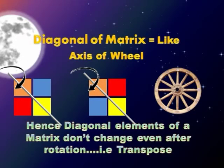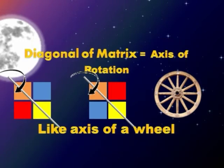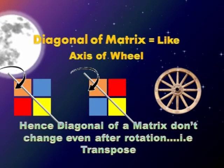You might have seen that the diagonal elements of a matrix never change even after taking the transpose. This is because the diagonal is like the axis of a wheel, and that is why the diagonal elements stay where they are even after taking the transpose. This is very similar to the axle of a wheel remaining where it is even during the rotation of the wheel. Everything else moves, but the elements on the axle stay where they are.